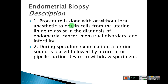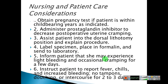Endometrial biopsy. Description: the procedure is done with or without local anesthetic to obtain cells from the uterine lining to assist in diagnosis of endometrial cancer, menstrual disorders, and infertility. During speculum examination, a uterine sound is placed, followed by a curette or pipelle suction device to withdraw the specimen, which is placed in formalin and sent to the laboratory.